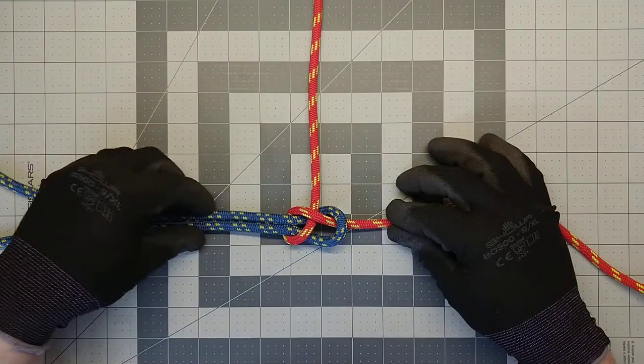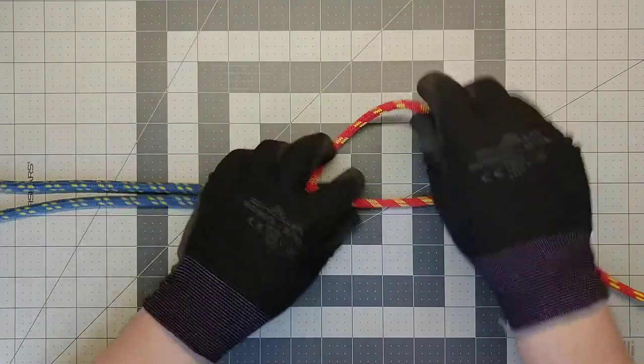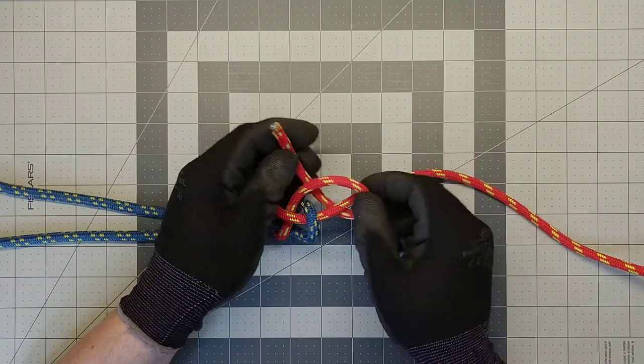Just like that, there's your basic becket bend. It's real easy to put safeties on this. We just do an overhand knot on each strand.